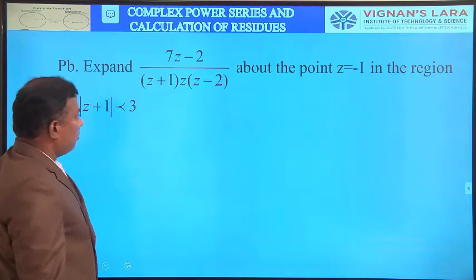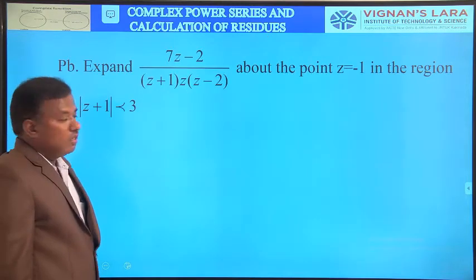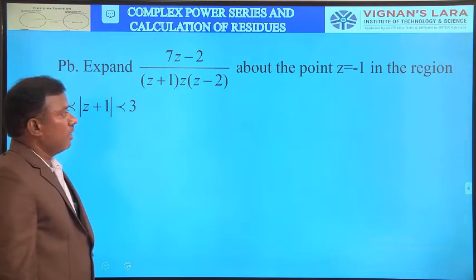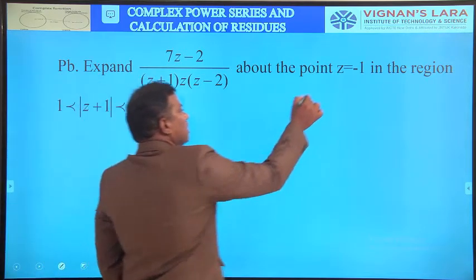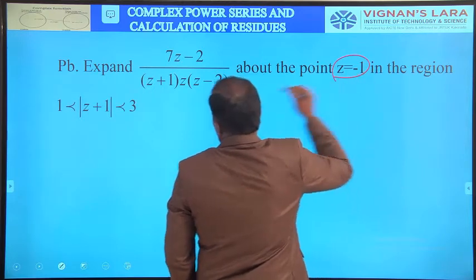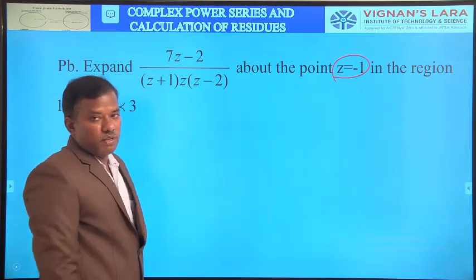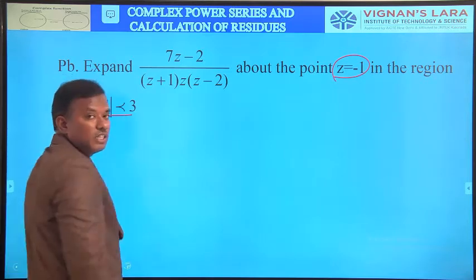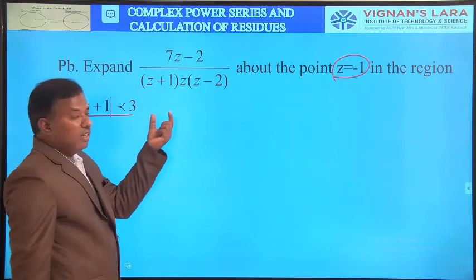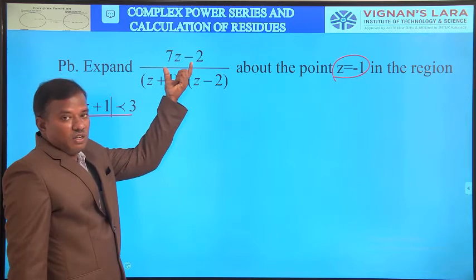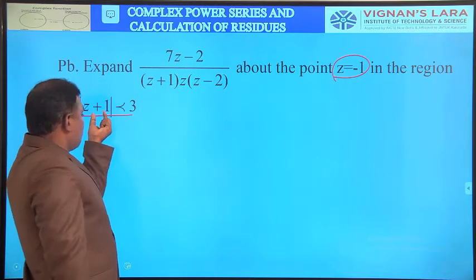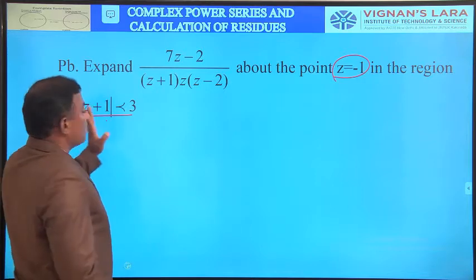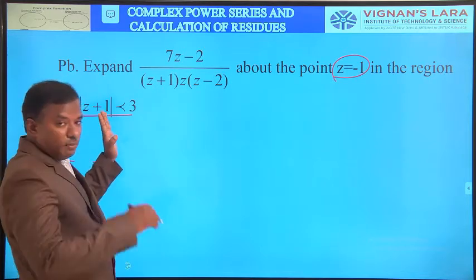The next problem: expand (7z-2)/[(z+1)(z)(z-2)] about the point z = -1 in the region 1 < |z+1| < 3. This region requires expanding each term in powers of z+1, using the two sub-regions 1 < |z+1| (so 1/|z+1| < 1) and |z+1| < 3 (so |z+1|/3 < 1).